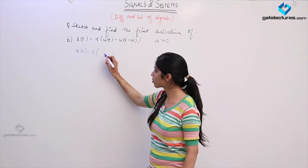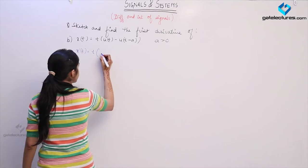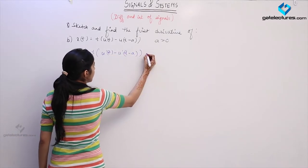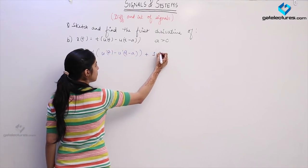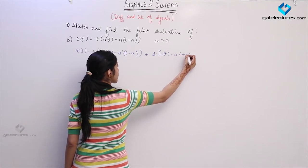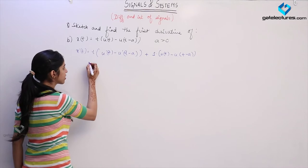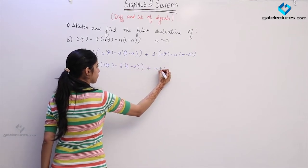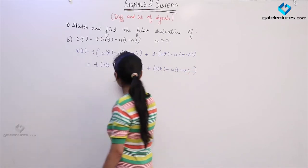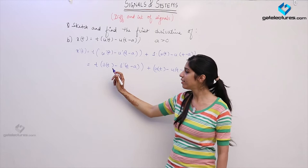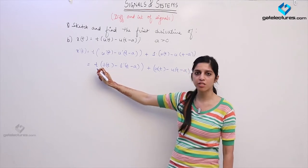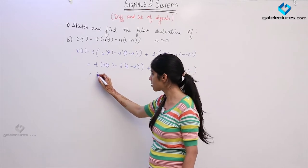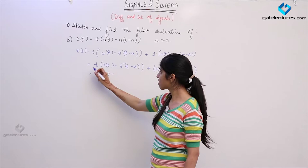Following the basic product rule — leaving t and differentiating the function inside the bracket first — differentiation of u(t) minus u(t minus a) gives delta(t) minus delta(t minus a), which we already looked at in the previous part. Next, differentiating t gives 1, multiplied by u(t) minus u(t minus a). Now applying the shifting property of the impulse: this impulse occurred at t equal to 0, and the value of t at t equal to 0 is 0. So t·delta(t) becomes 0, and t·delta(t minus a) becomes a.